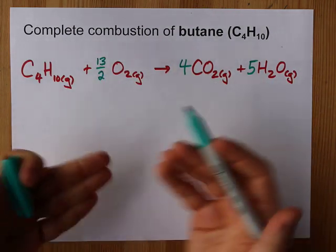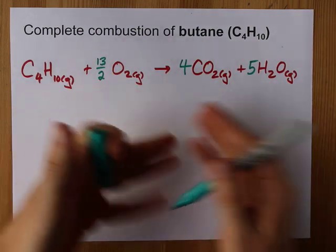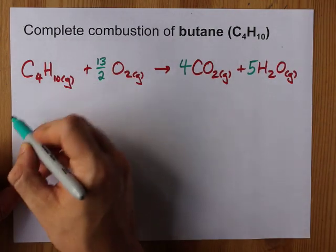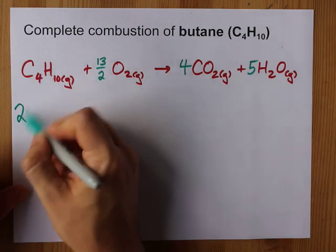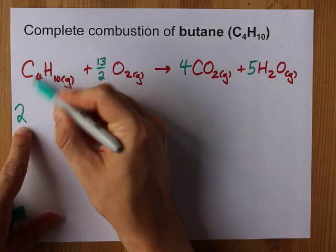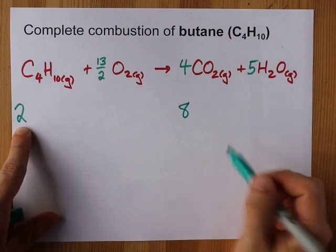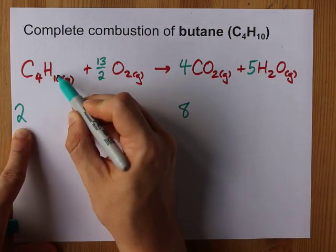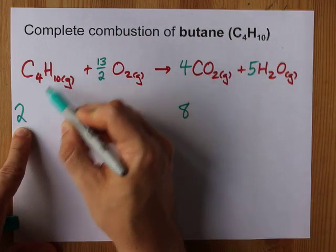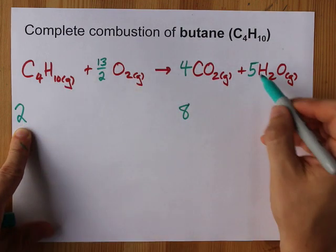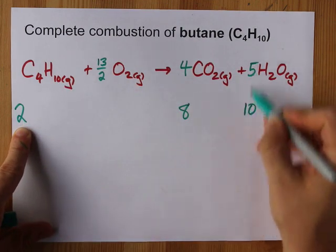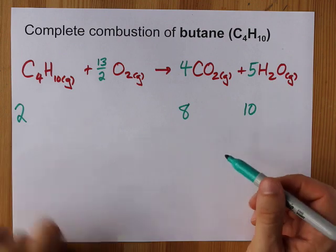Some teachers are not going to want you to use a fraction. What you would have had to have done was to double everything. Put a two in front of the butane. You now have eight carbons. So that four becomes an eight. You have twenty hydrogens. See you have two molecules and ten hydrogens each. That means that this number becomes ten. Oh look, everything is just double from what it was.